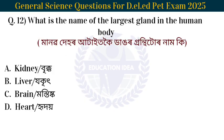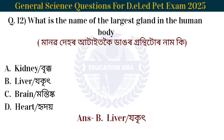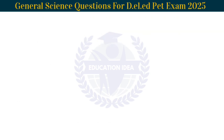Next question: What is the name of the largest gland in the human body? The largest gland in the human body — the answer is the liver.